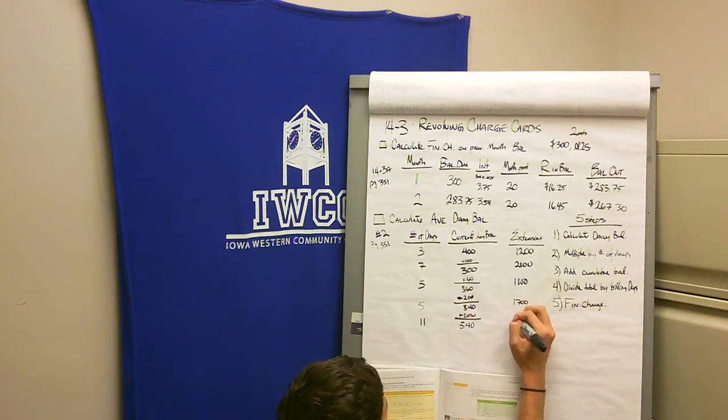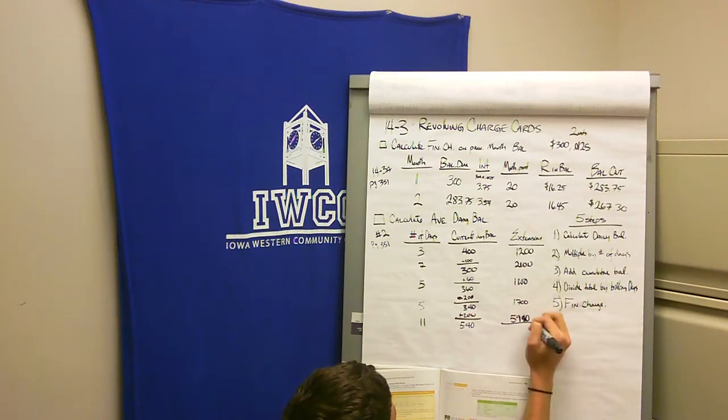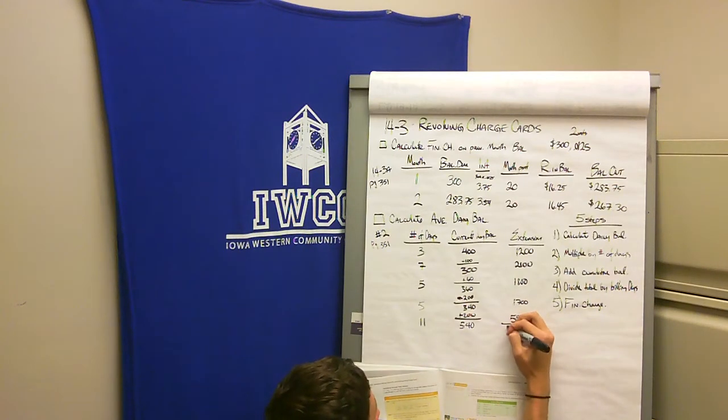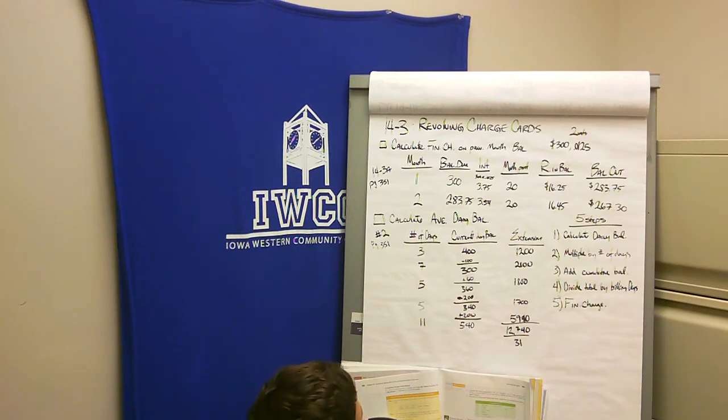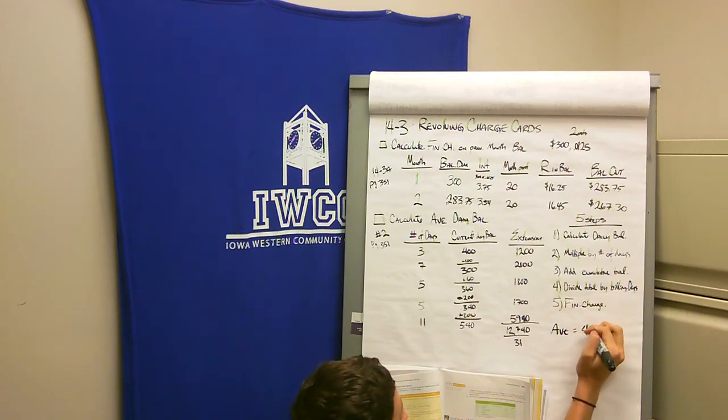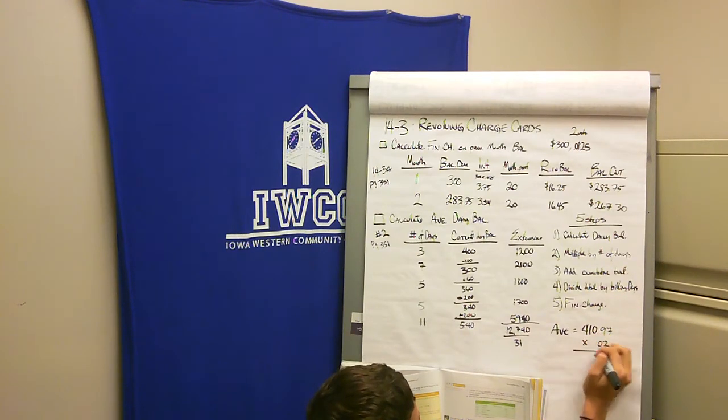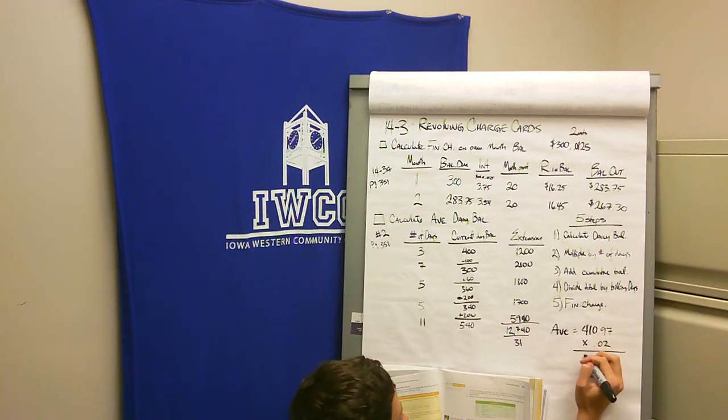I add all these together. $5,940, $1,700, $1,800, $2,100, $1,200. I got $12,740. I divide that by my billing days, which is 31. So my average daily balance is $411.097. Now my finance charge, they told me in the problem, is 2%. So I have to multiply that by 0.02. We have an $8.22 finance charge.